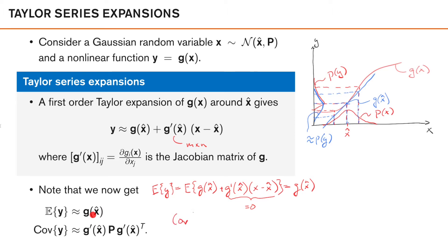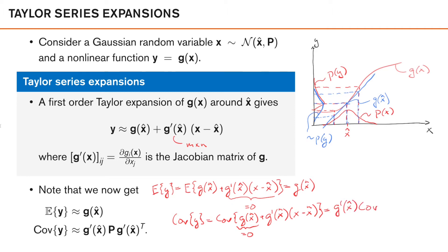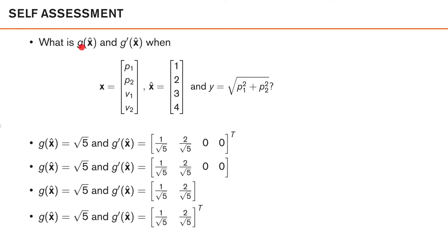For the covariance, the covariance of y equals the covariance of the linearized expression. The deterministic terms move outside, leaving the covariance of x, which is simply P. So we get the covariance expression g'(x̂) P g'(x̂)ᵀ. Now try this yourself: what is g(x̂) and g'(x̂) when x is a given random vector with a specific x̂ value and g is a given nonlinear mapping?